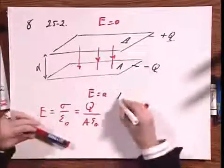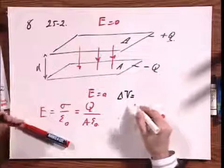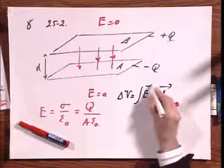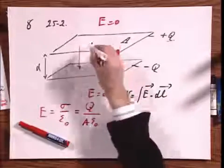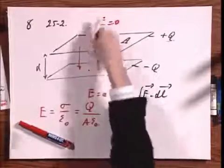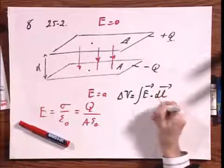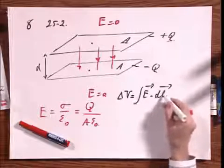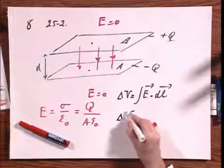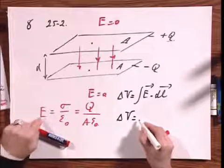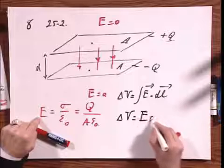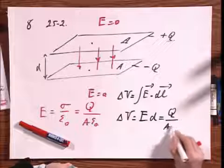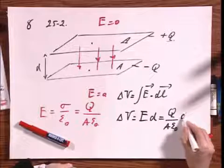The potential difference between the plates, delta V, is the integral E dot dL. Well when you go from here to here, E and dL will be in the same direction, so you get a plus sign there for the cosine of the angle theta. The integral of dL is simply the separation d, so you get that the potential difference is that value E that you already calculated here times d. And so that becomes Q divided by A epsilon zero times d.